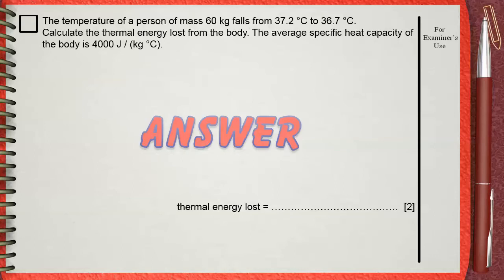Again, let's see the givens. 60 kilograms, this is the mass M. We have the initial temperature, 37.2 degrees Celsius, to the final temperature,